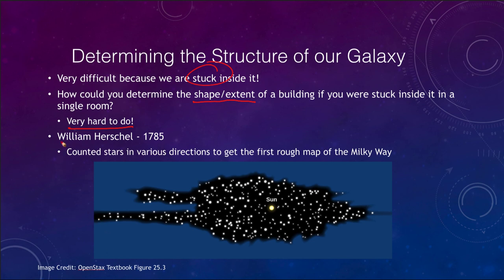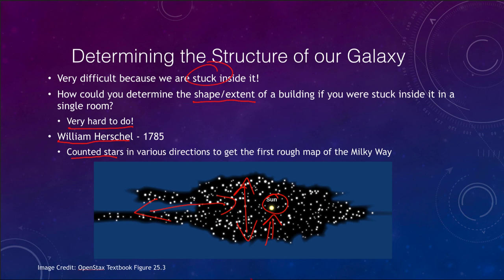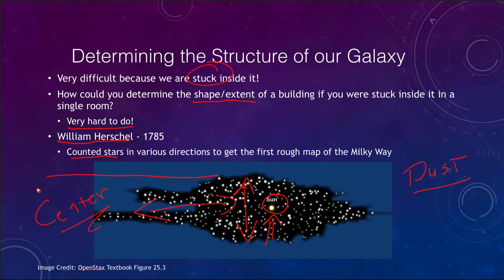One astronomer, William Herschel, in 1785 counted stars in various directions to try to get the first rough map of the Milky Way. He found our sun relatively close to the center of the galaxy, and he did notice that the galaxy was flattened — there were far more stars in the plane than in the up-and-down direction. One of the problems he had is that he did not understand that there was a lot of dust. Looking toward the center of our galaxy, most of the stars there are completely blocked by dust. So there are actually a lot more stars there, and our galaxy extends a lot farther in that direction.